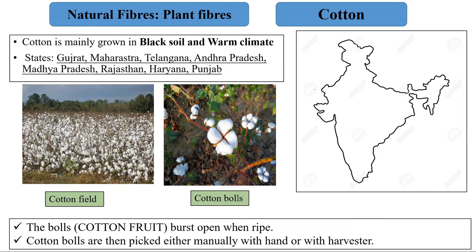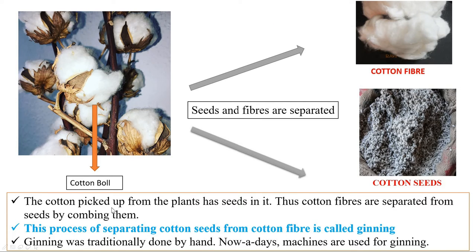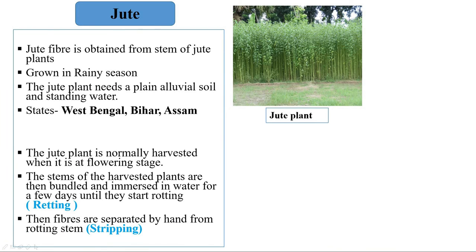Let's study plant fibers in detail. Cotton fibers are obtained from the fruits of cotton plants, called cotton balls. Cotton is mainly grown in black soil and warm climate. In India, cotton is mainly grown in Gujarat, Maharashtra, Telangana, Andhra Pradesh, Madhya Pradesh, Rajasthan, Haryana, and Punjab. When the balls are ripe, they burst open and are picked either manually or with a harvester. The cotton picked from plants has seeds in it, so cotton fibers are separated from seeds by combing — this process is called ginning. Ginning was traditionally done by hand; nowadays machines are used.